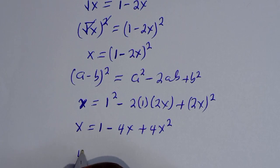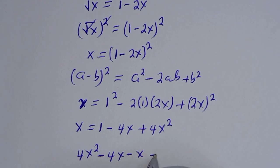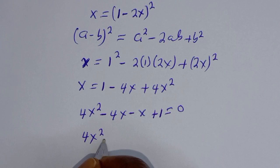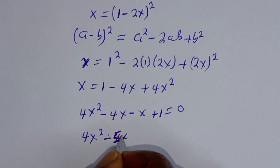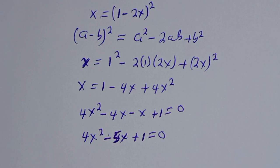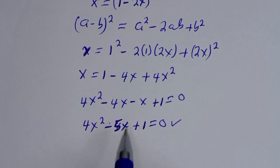This gives us 4s squared minus 4s minus s plus 1 is equal to 0, which simplifies to 4s squared minus 5s plus 1 is equal to 0. This is a quadratic equation which can be solved using the quadratic formula or factorization method.